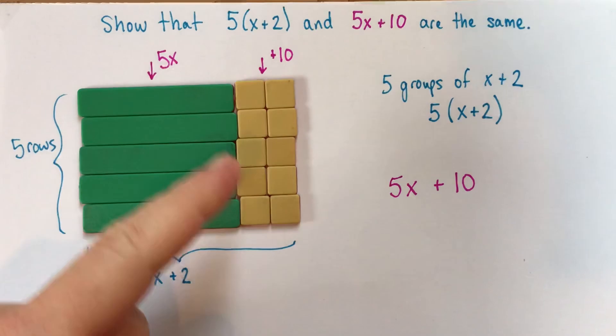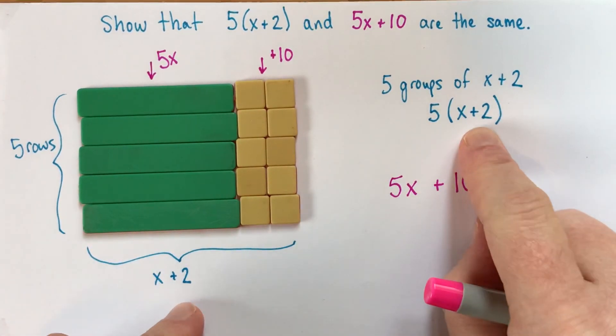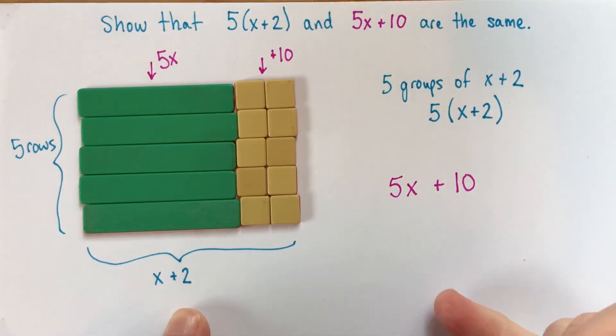So this drawing also shows 5x plus 10. So because the same drawing shows both 5 times x plus 2 and 5x plus 10, that shows us that those are, in fact, the same amount. Alright, thanks.